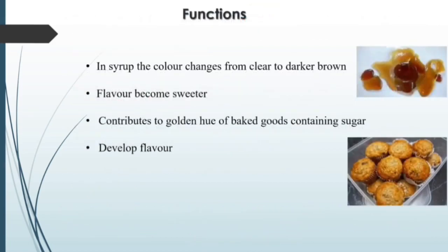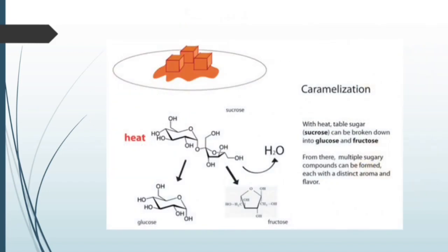The functions of caramelization: it provides a darker brown color, which is desirable — for example, in syrup the color changes from clear to darker brown. Flavors become sweeter, and it contributes a golden hue to baked goods containing sugar, also improving the flavor. In the process, the disaccharide sucrose, when heat is supplied, breaks down with water molecules removed, converting into the monosaccharides glucose and fructose.